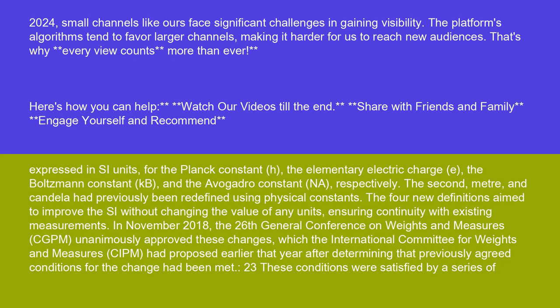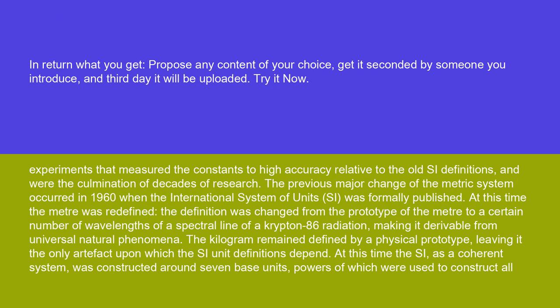In November 2018, the 26th General Conference on Weights and Measures (CGPM) unanimously approved these changes, which the International Committee for Weights and Measures (CIPM) had proposed earlier that year after determining that previously agreed conditions for the change had been met. Twenty-three of these conditions were satisfied by a series of experiments that measured the constants to high accuracy relative to the old SI definitions, and were the culmination of decades of research.